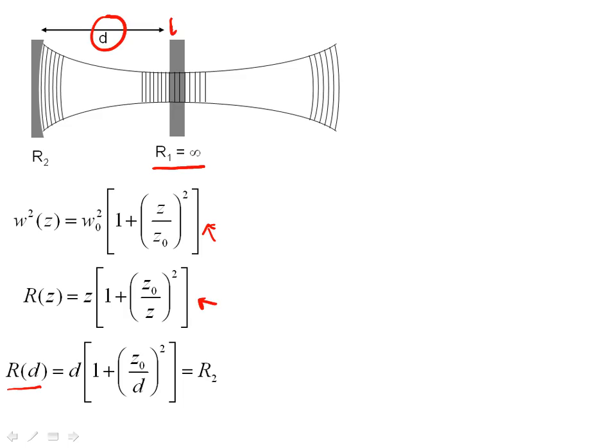because z equals 0 is defined to be at the waist, and we know where the waist is, we can just solve this simple algebraic equation to get the parameters of the Gaussian beam created by this cavity. And in this special case, it's fairly easy to do. And this is done in the first part of Chapter 5 of your book.